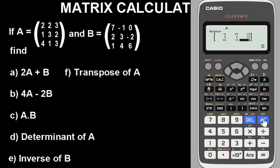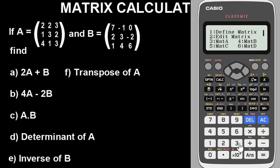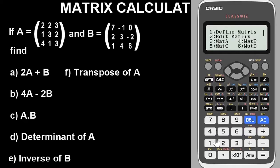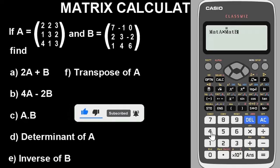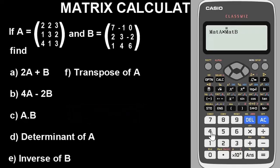Now let's do the multiplication aspect — it's very simple. Go back to option, select matrix A (option 3), press times, then go to option and select matrix B (option 4). This A dot B stands for multiplication, A times B. Press equals to get the answer — this is the result of multiplying these two matrices.